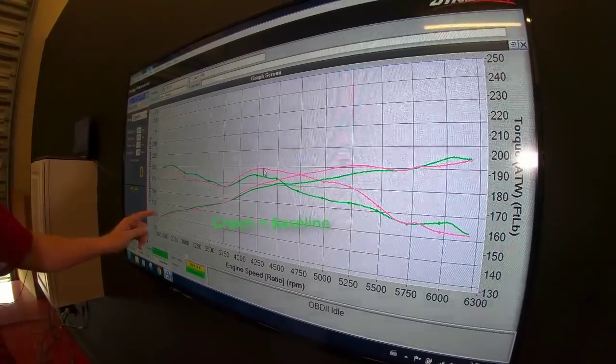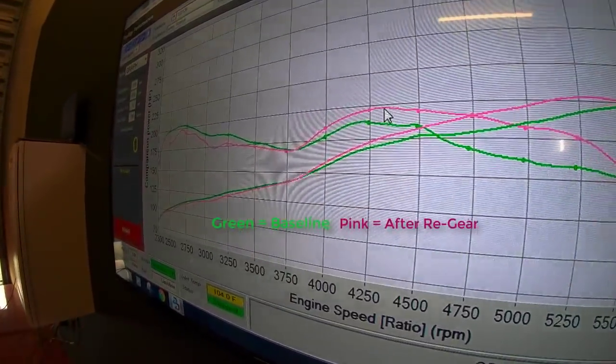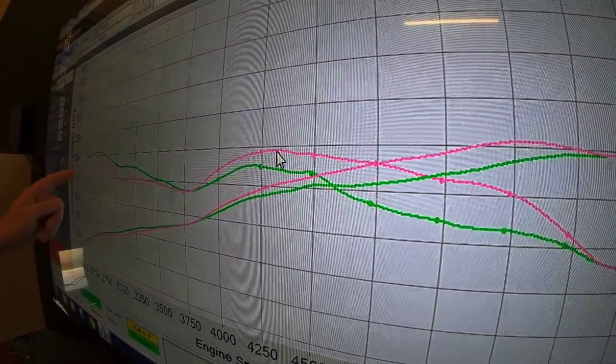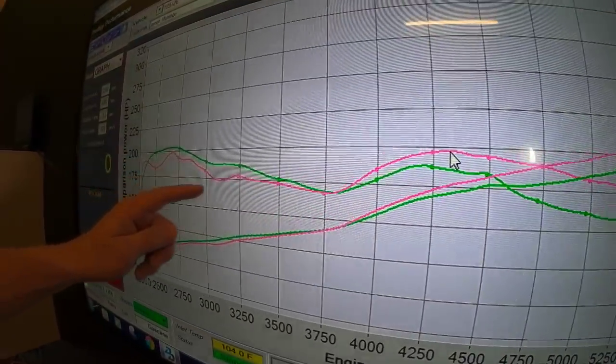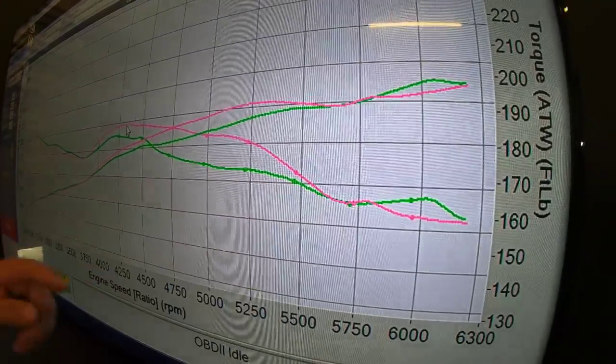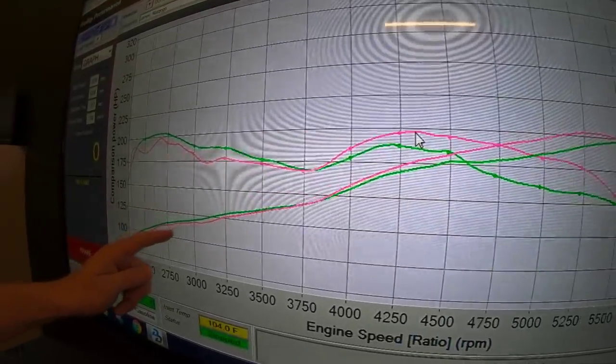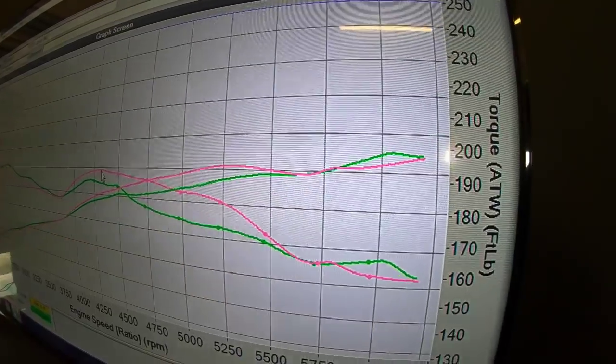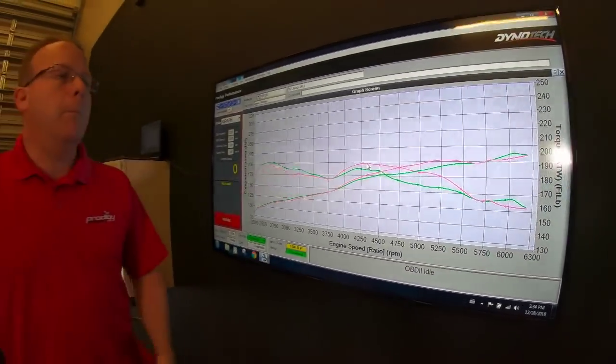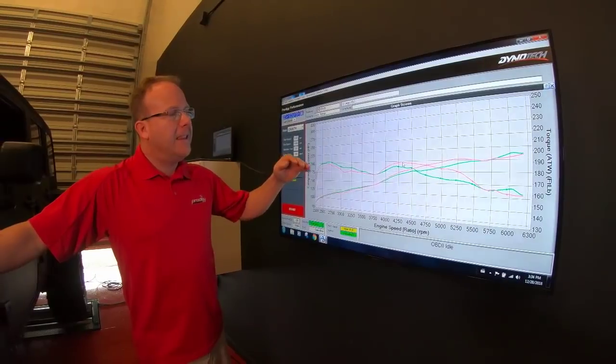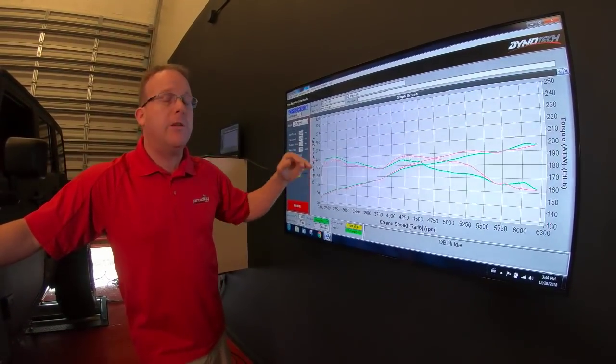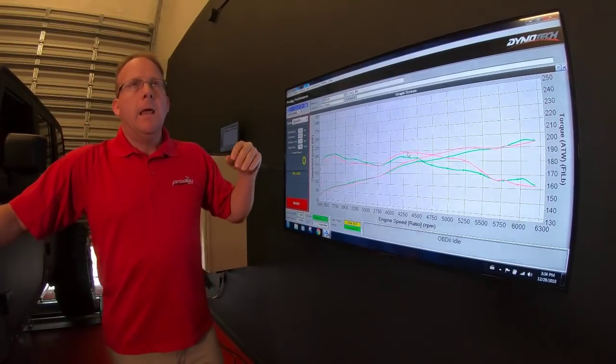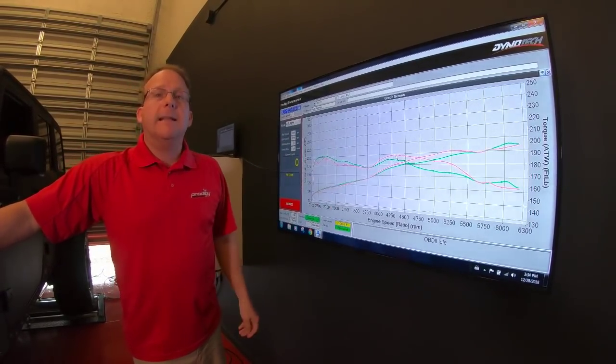The green was our baseline run, the pink was the one we just did a minute ago. You can see it's pretty inconclusive. We may have lost a little bit here, gained a little bit there, lost it over here. Same thing with our horsepower - we were pretty much looking the same. This is a little bit more variation than you'd normally see if we just made run two, run ten, that type of thing.